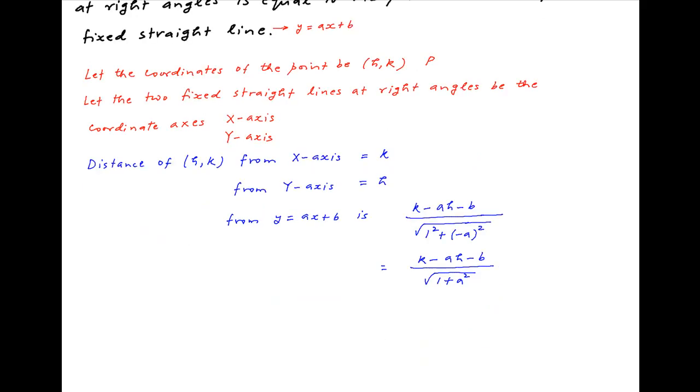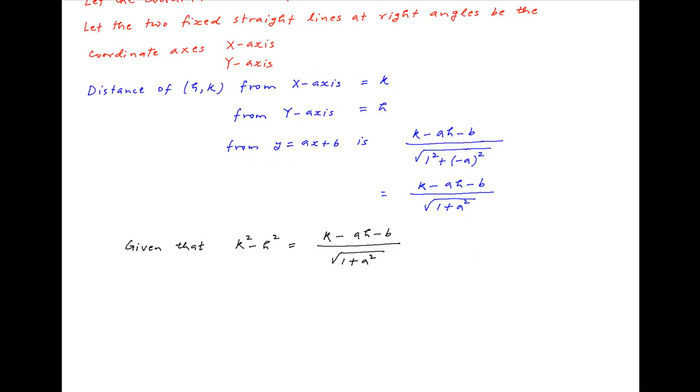Now we are given that the difference of the squares of the distances of the point P from the axes is equal to the distance of the point P from the line y equals ax plus b. This implies that k squared minus h squared equals (k minus ah minus b) divided by square root of (1 plus a squared).